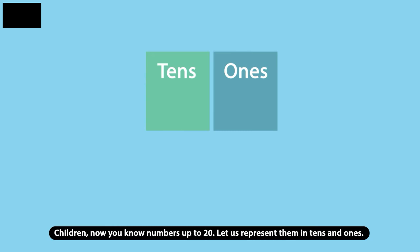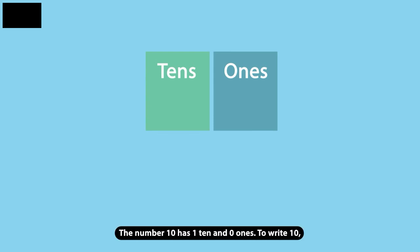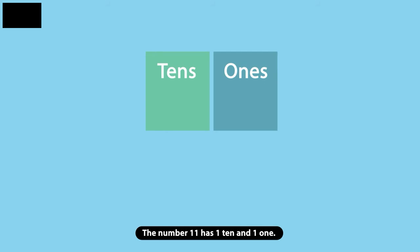Let us represent them in tens and ones. The number 10 has one 10 and zero ones. To write 10, we put 0 in the ones place and 1 in the tens place.